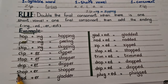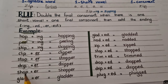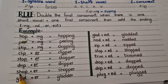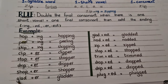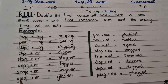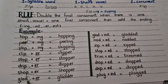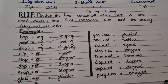'Shop'. Shop is a one-syllable word, and it also has one short vowel and a final consonant. So we will double the final consonant. 'Shop' becomes 'shopper'. 'Glad'. Glad is a one-syllable word, and it also has one short vowel and a final consonant. When we add a suffix at the end of the word, then we will double the final consonant. 'Glad' becomes 'gladder'.